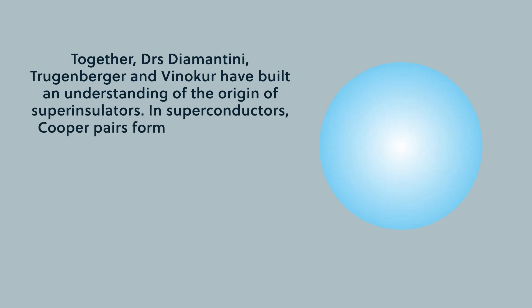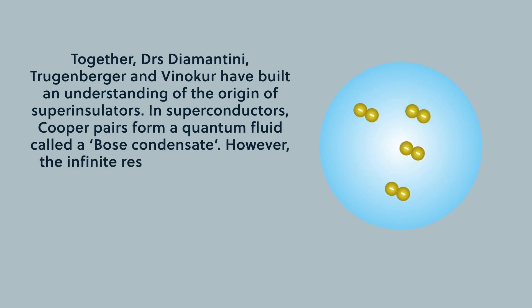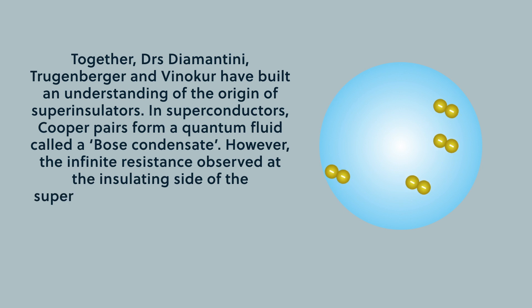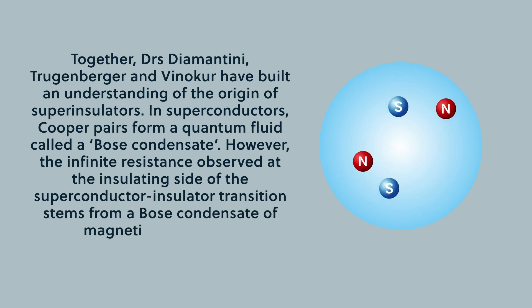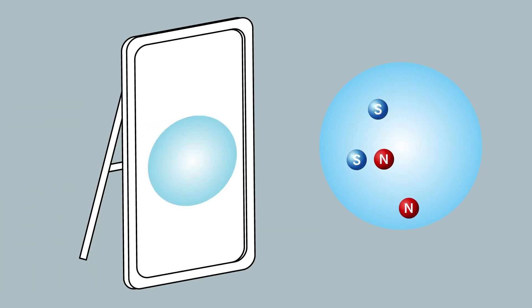Together, Drs. Diamantini, Truggenberger, and Vinicor have built an understanding of the origin of superinsulators. In superconductors, Cooper pairs form a quantum fluid called a Bose condensate. However, the infinite resistance observed at the insulating side of the superconductor-insulator transition stems from a Bose condensate of magnetic monopoles. This Bose condensate of magnetic monopoles is a mirror twin of the Bose condensate of Cooper pairs in the superconducting state. Therefore, duality between electrical and magnetic charges emerged again, and was strongly evidenced by experiment.